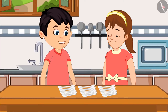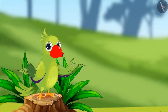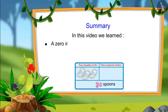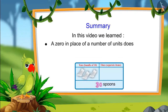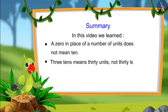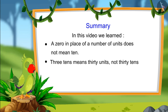Come on, let's take spoons for the guests. So, children, that's all for today. In this video, we learned that 0 does not mean 10 at the end of a number, and 3 tens means 30 units, not 30 tens. I hope you would have understood this topic. Bye, friends.